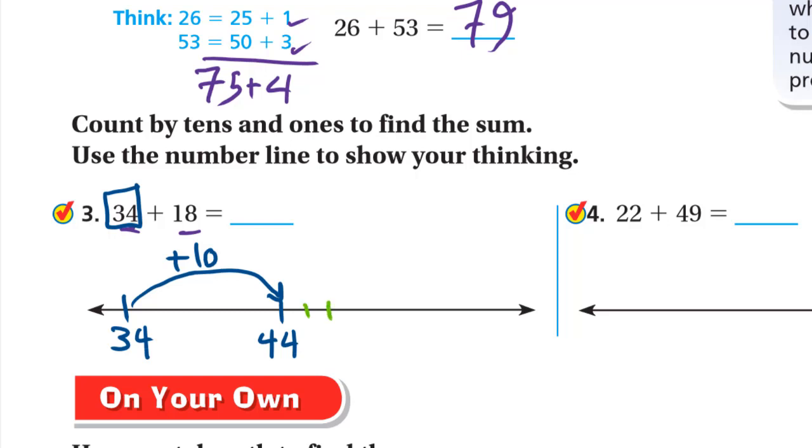So 1, 2, 3, 4, 5, 6, 7, 8. After 44, 45, 46, 47, 48, 49, 50, 51, 52. So our answer is 52. So we added 10, then we added 8.